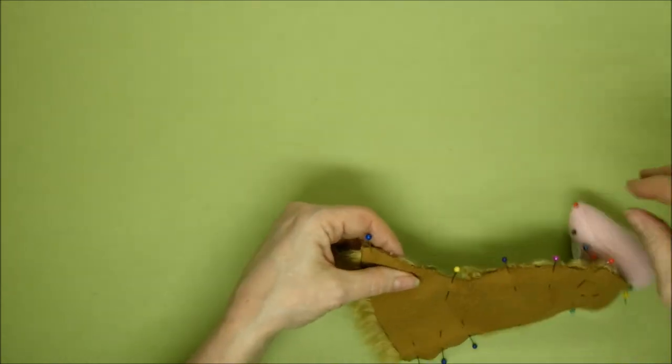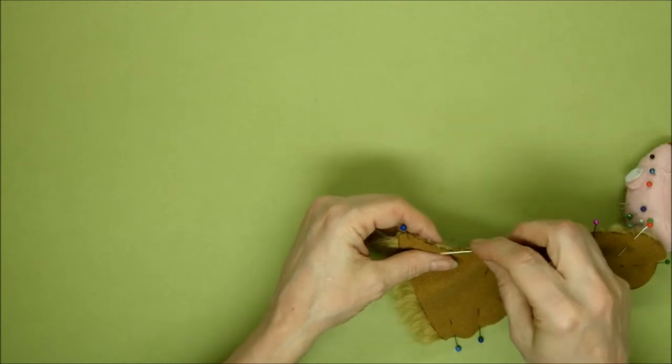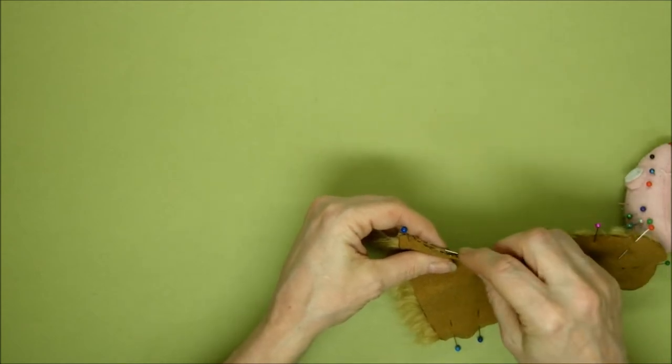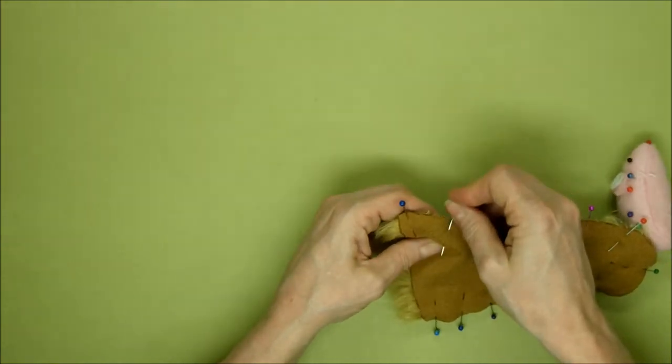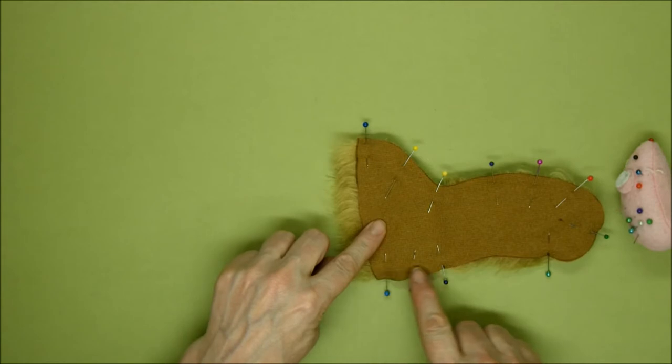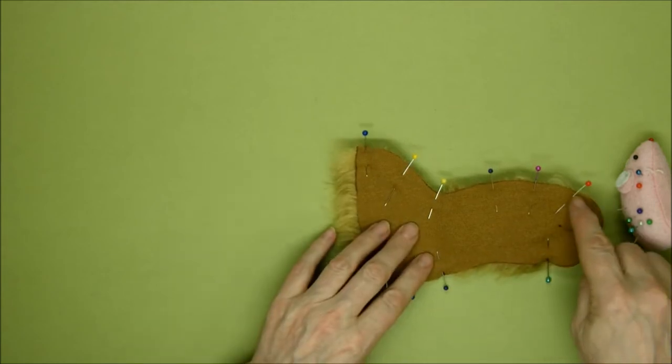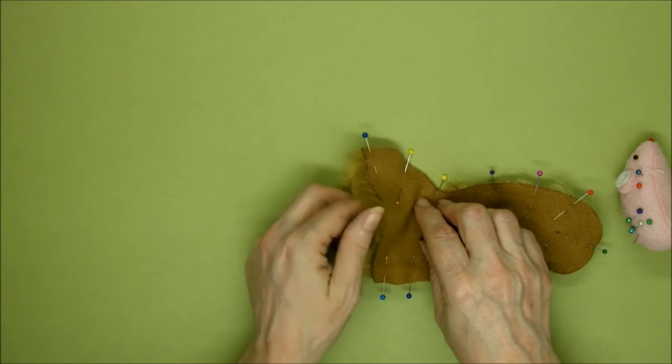There we go. Add another one down here, just tuck that in. And we're going to sow this little bit at the heel, and then we're going to go all the way around to the tip of the toe, leaving this bottom bit open to add the foot pad.